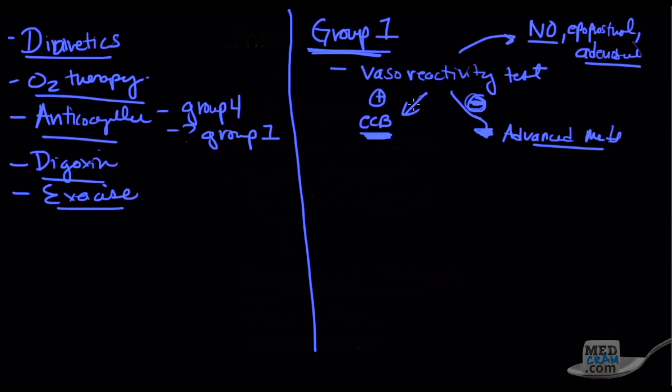It's a very small percent that are actually reactive. Most of these are going to go into the negative category, and so most of them are going to be having to be put on advanced medications if we're dealing with group one.